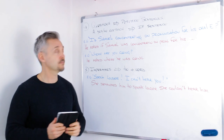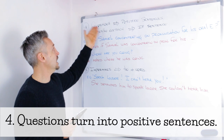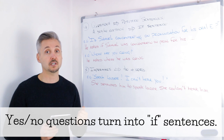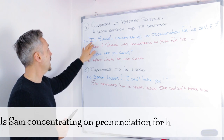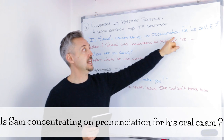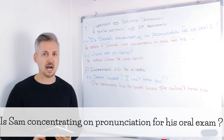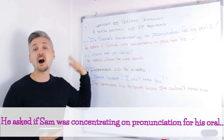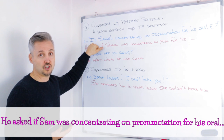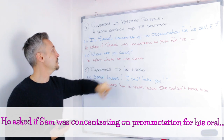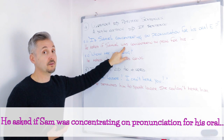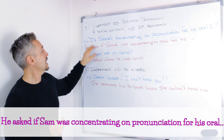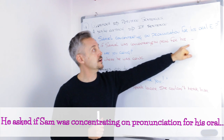So here we have the next rule: questions. What happens to questions? Questions turn into positive sentences. For a yes or no question, you need to add 'if' to the reported speech. For example: Is Samuel concentrating on pronunciation for his oral exam? This is direct speech. The reported speech would be: he asked — because it's a question — he asked if Samuel was concentrating on pronunciation for his oral exam. We take the present continuous back to past continuous.